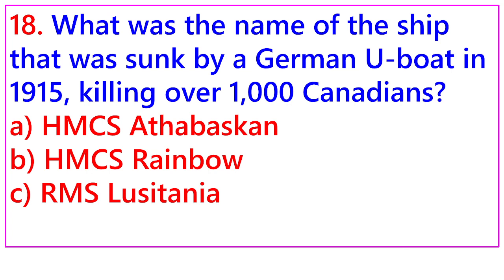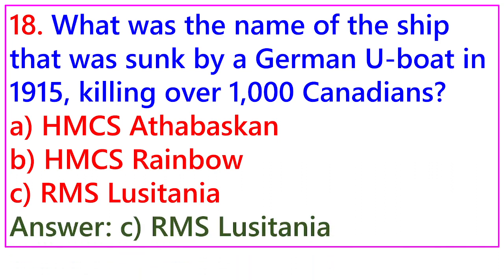Question 18: What was the name of the ship sunk by a German U-boat in 1915, killing over 1,000 Canadians? A. HMCS Athabaskan, B. HMCS Rainbow, C. RMS Lusitania. Answer: C. RMS Lusitania.